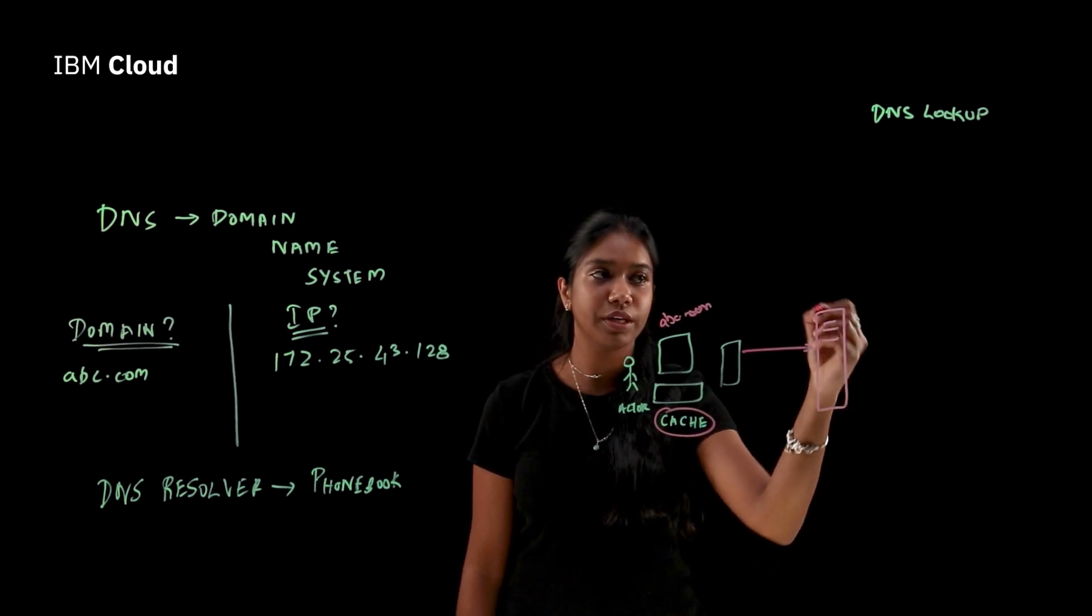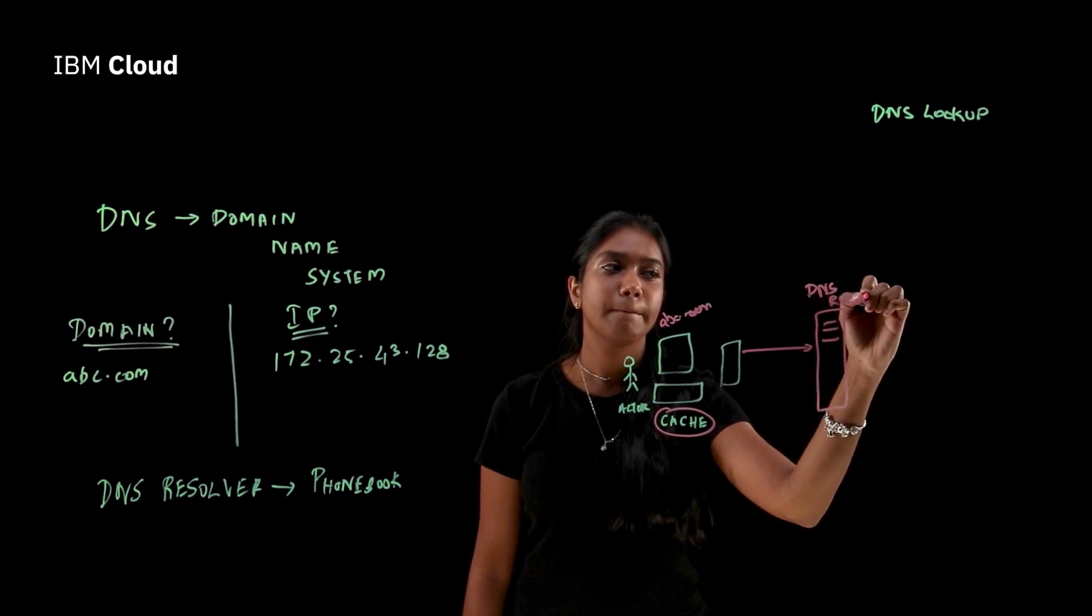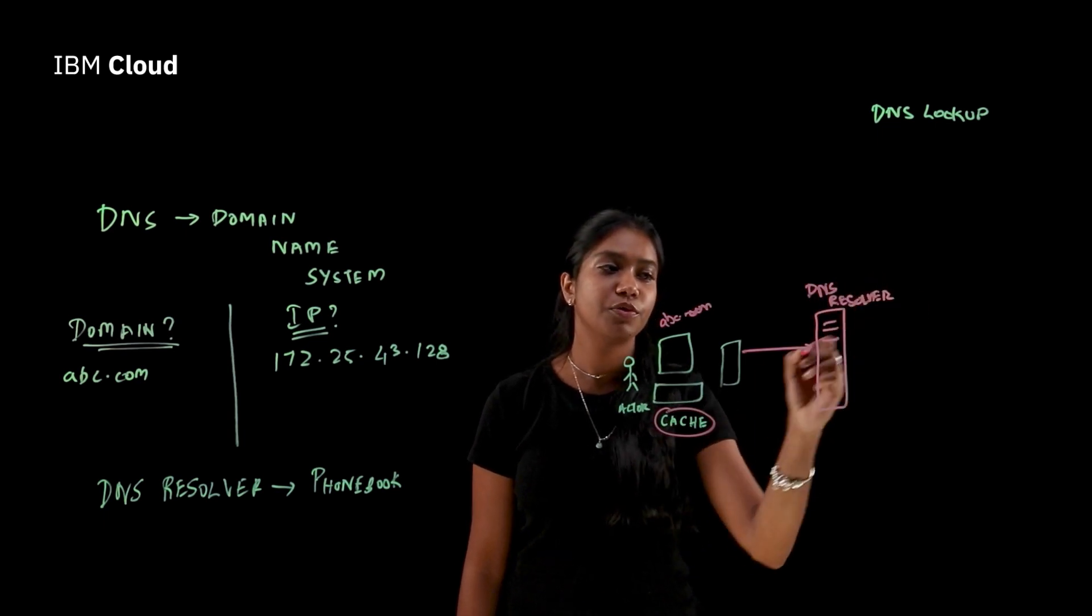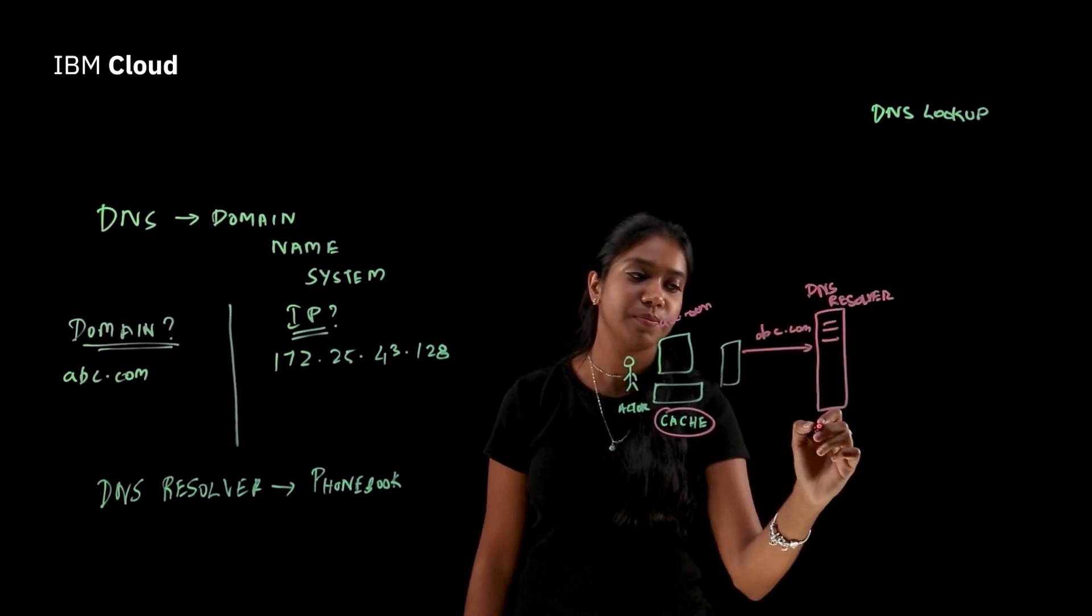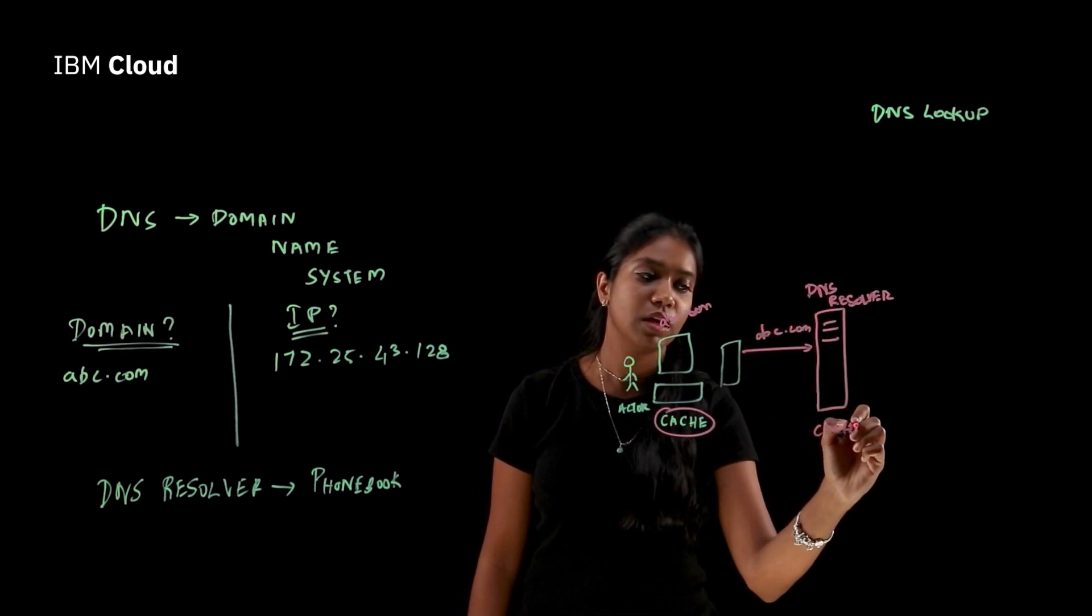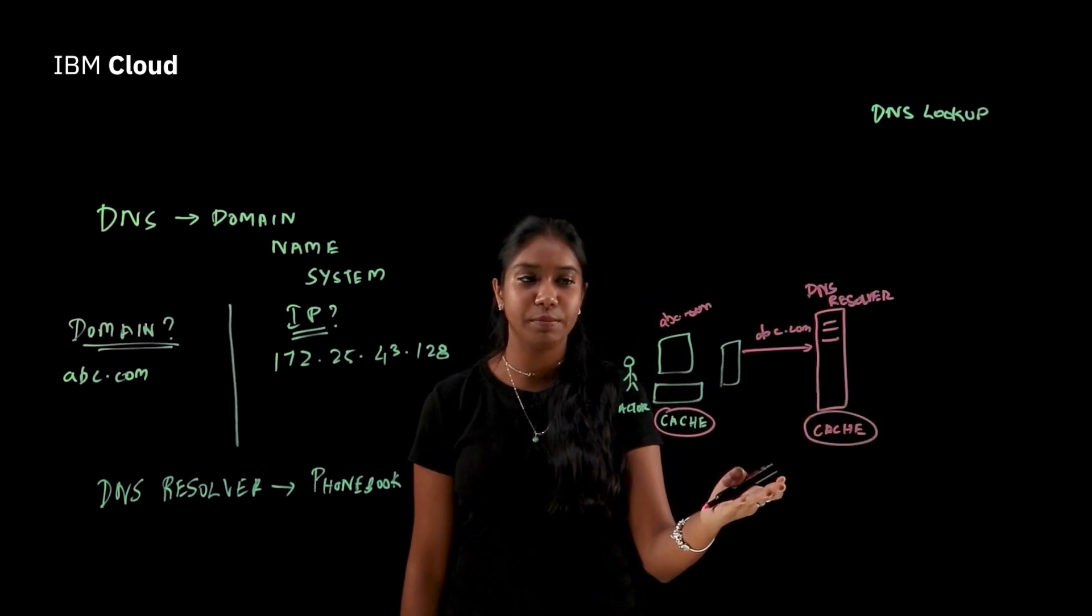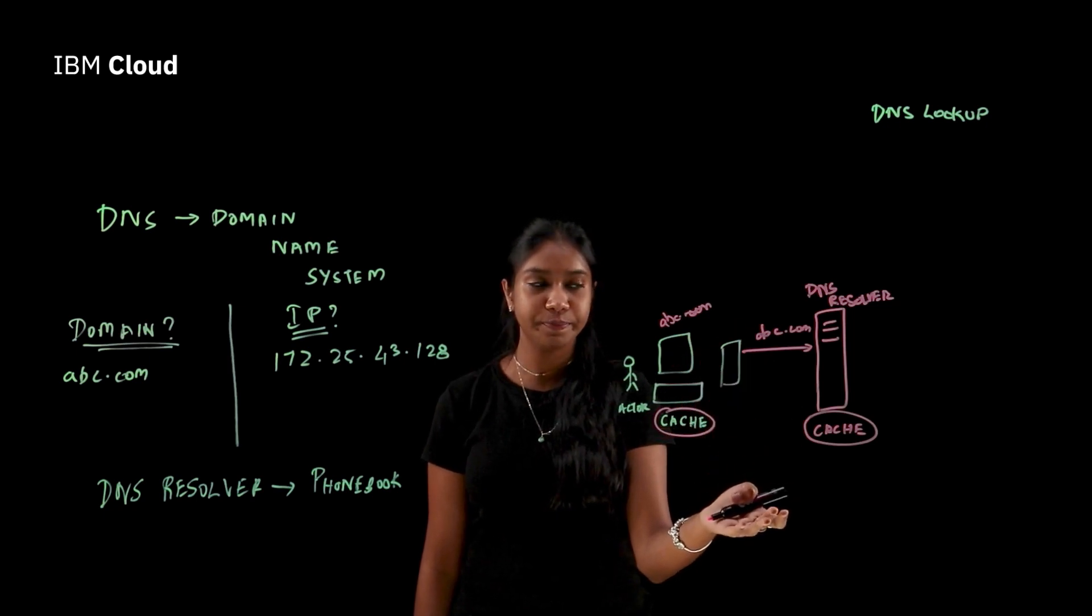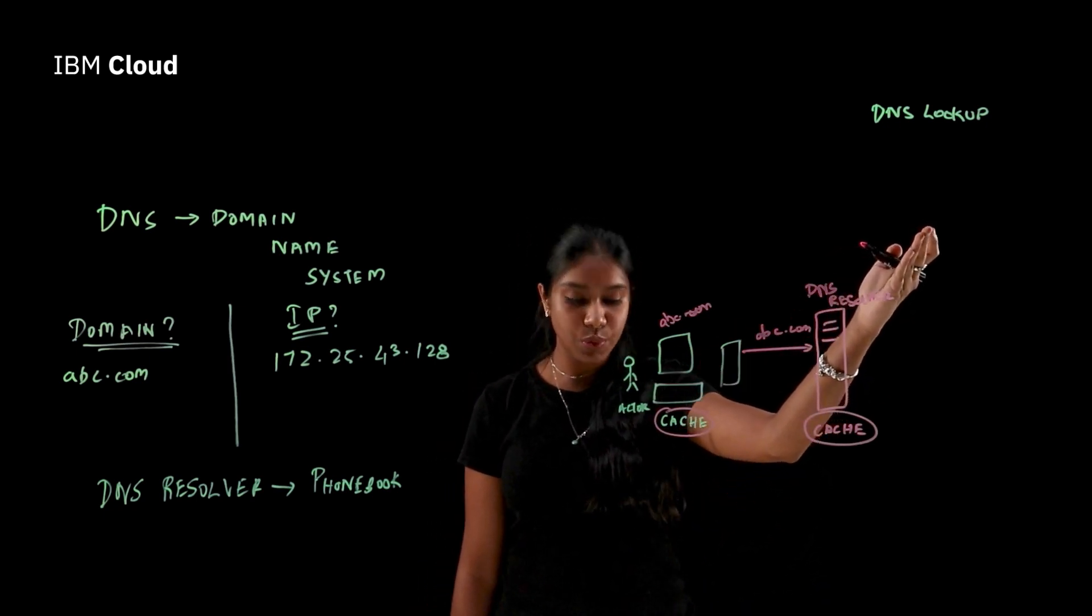So this is going to be our DNS resolver for the day. And now from here, the DNS resolver has its own cache. It looks at its cache and says, hey, I don't have the IP address of the particular website that you're looking for. So what I'm going to do is I'm going to route your request to the root server.